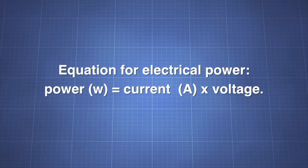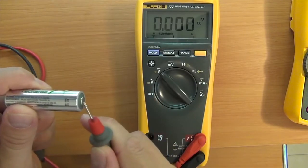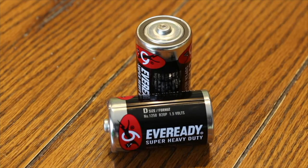Electrical power is equal to the current in a circuit multiplied by the voltage. Current is measured in amperes or amps. Voltage is measured in volts. A typical flashlight battery is 1.5 volts.